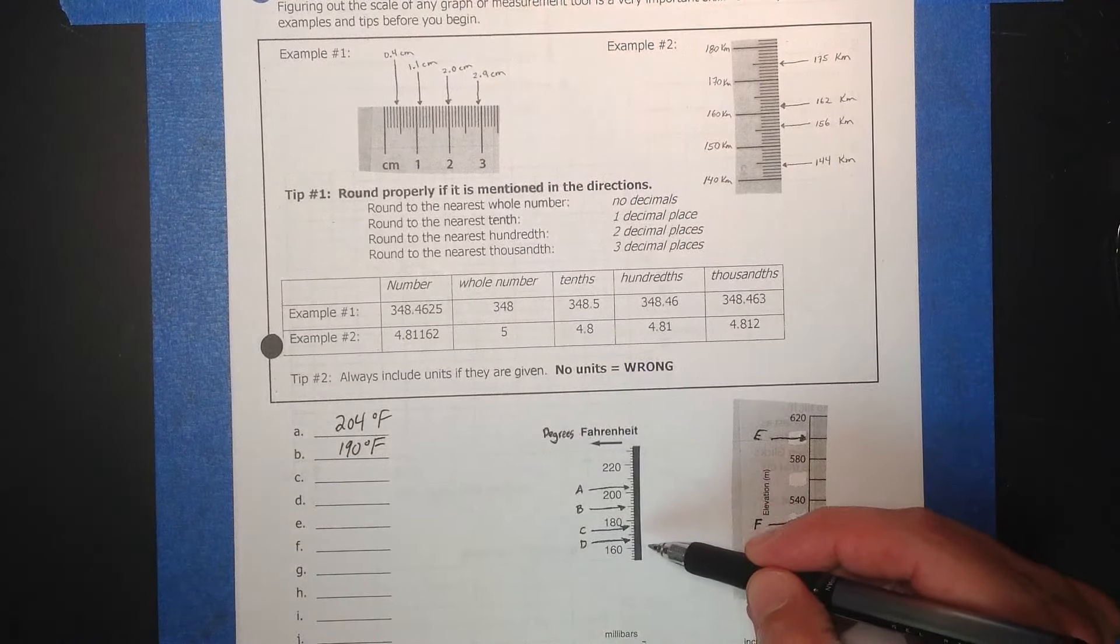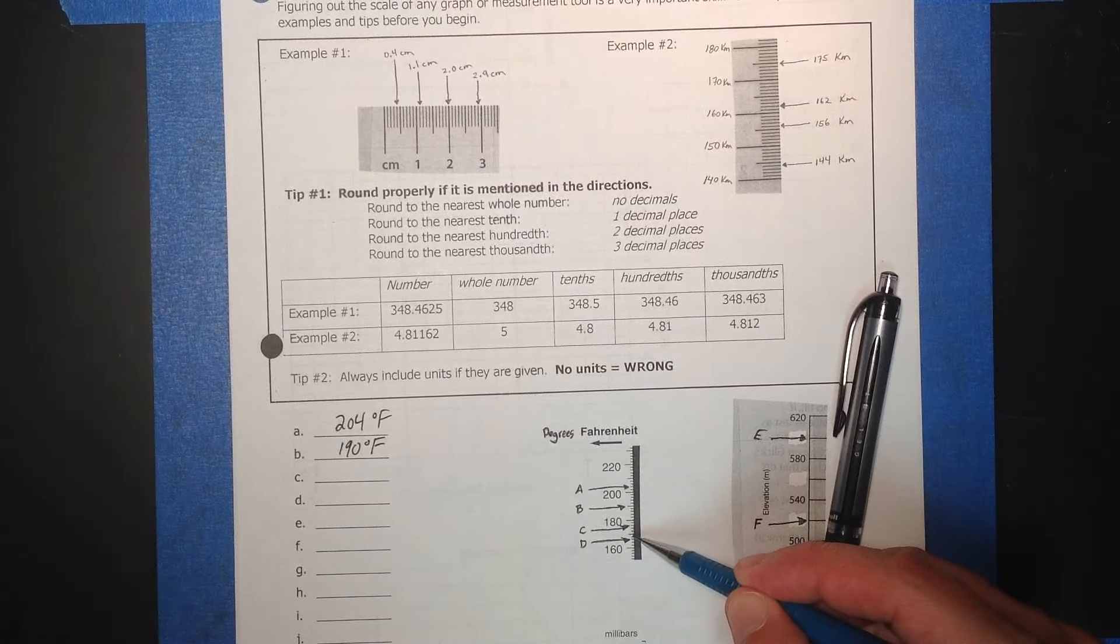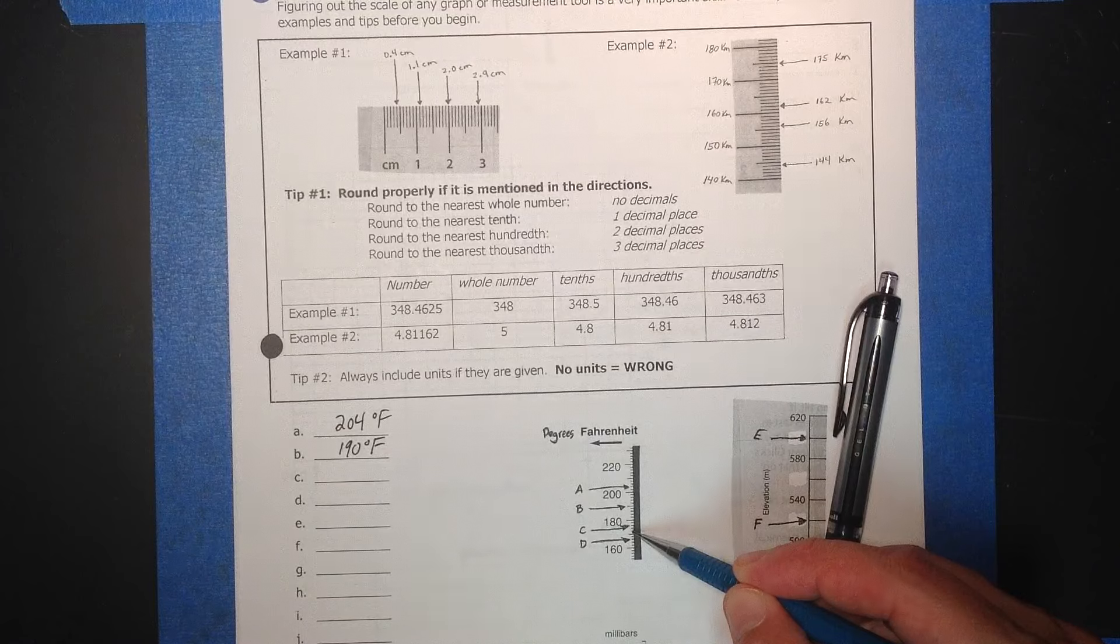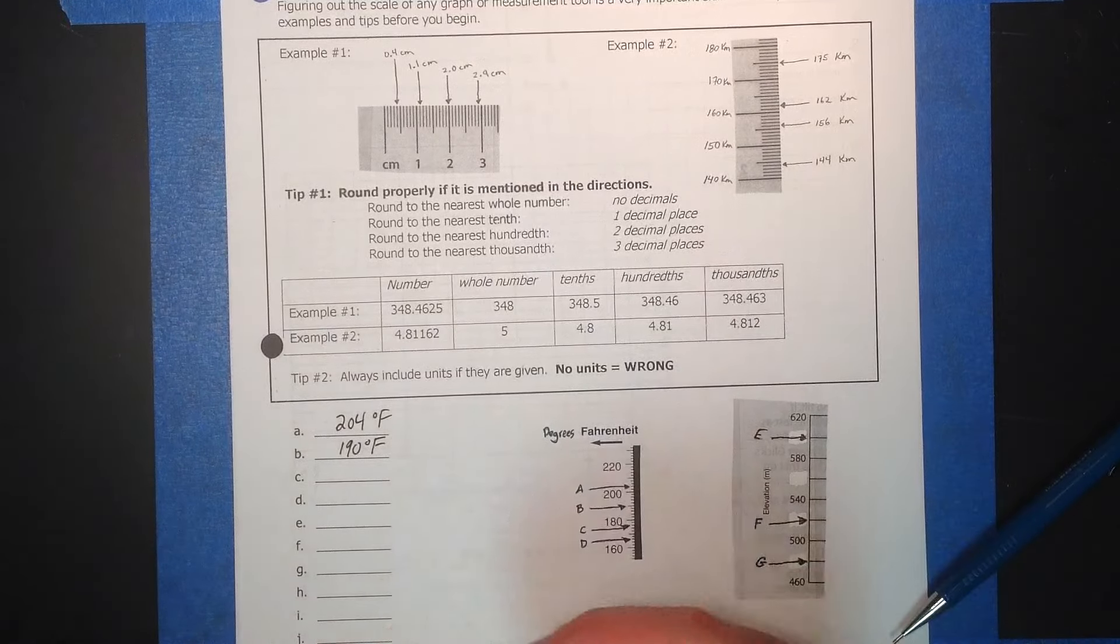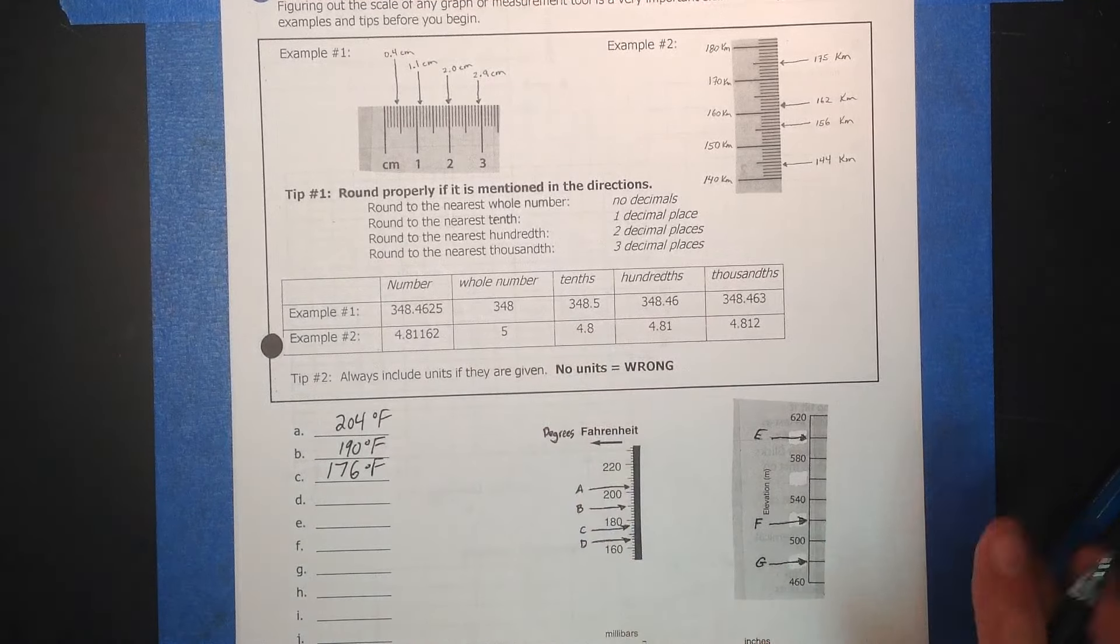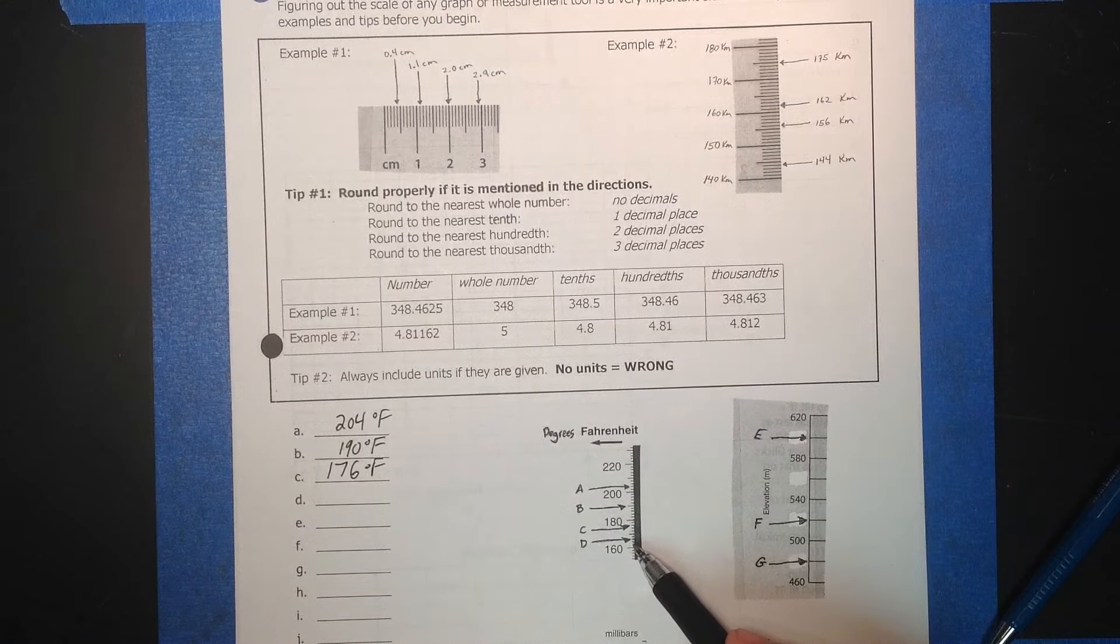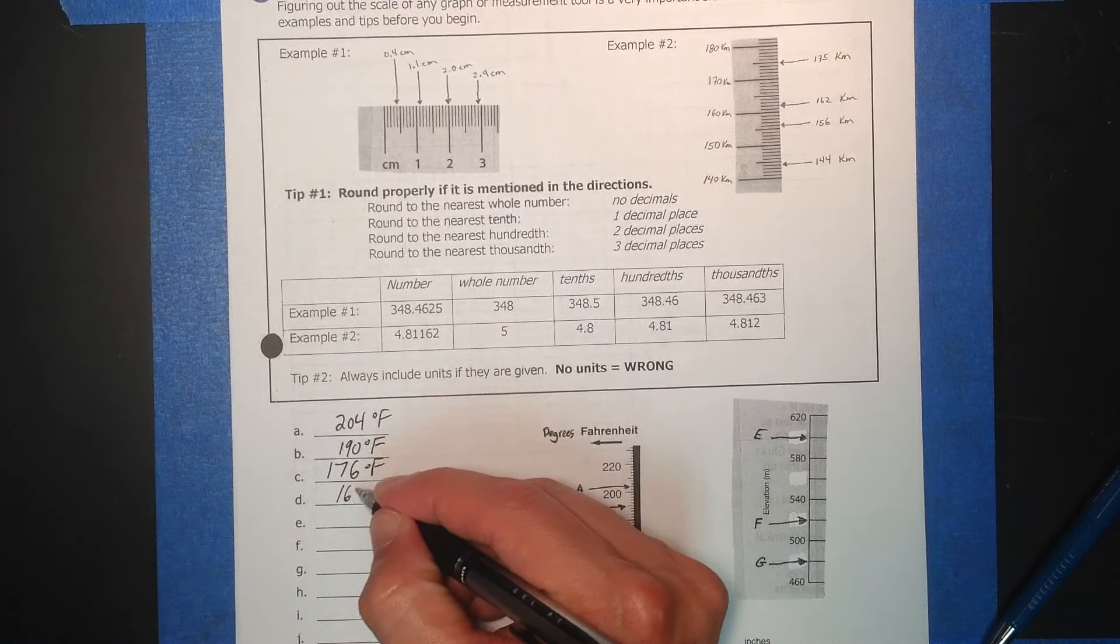It makes the rest of them easier. So C is, this is 160, that's 170. And then that's pointing to the third one up. So 172, 174, 176 degrees Fahrenheit. D is right there. So that's 162, 164, 166 degrees Fahrenheit.